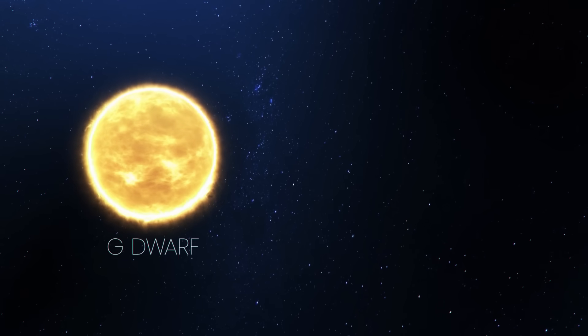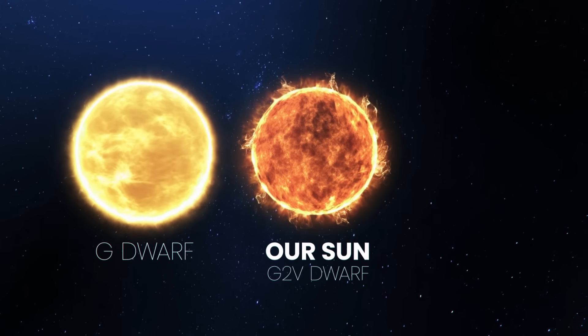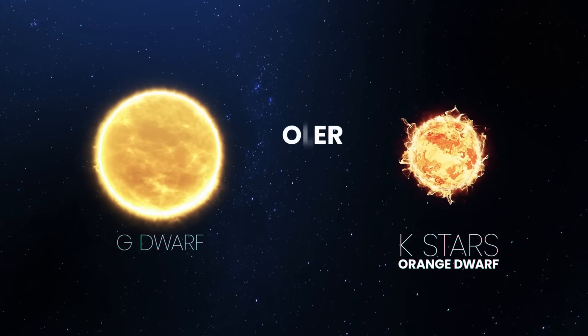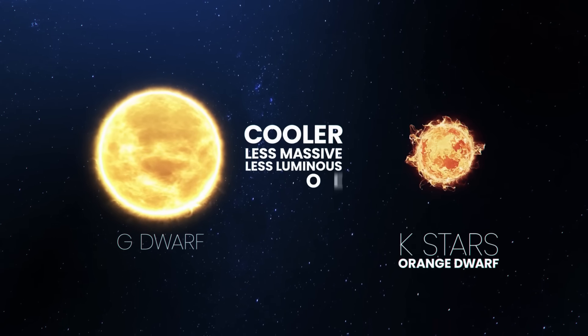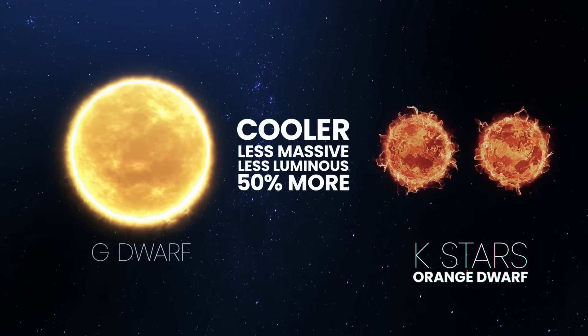Many of these orbit around G-dwarf stars similar to our Sun, but researchers also looked for exoplanets orbiting around K-stars. Orange dwarf stars that are cooler, less massive, less luminous, and there are 50% more orange dwarfs than yellow dwarfs in the Milky Way.